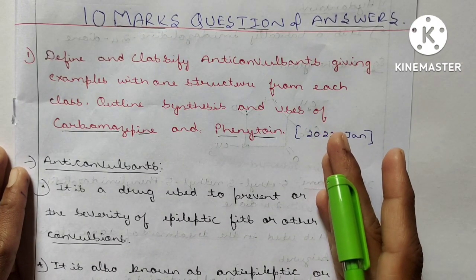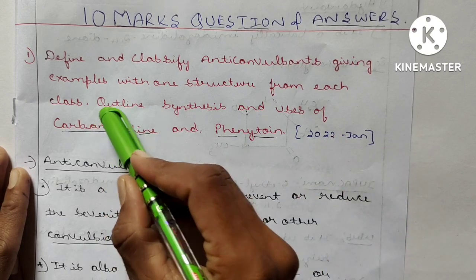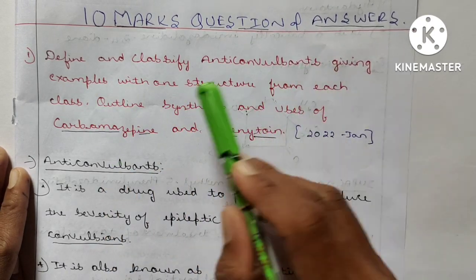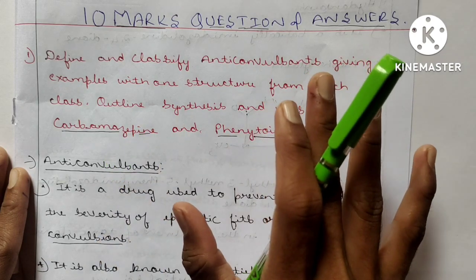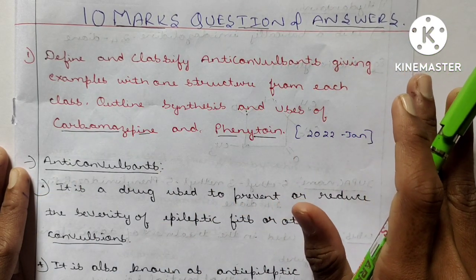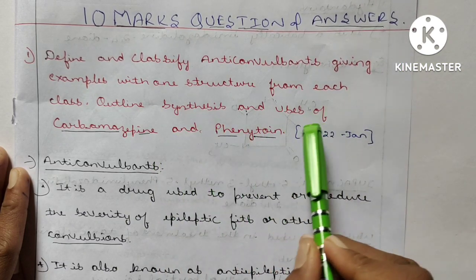First question is: define and classify anticonvulsants giving example with one structure from each class. You don't worry, every concept I will clear from your mind. Outline synthesize and uses of carbamazepine and phenytoin.